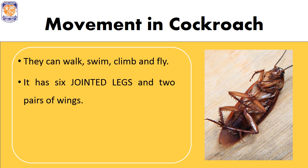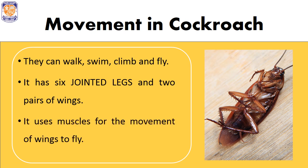They are called jointed legs because they are joined at one particular place. The cockroach uses strong muscles for the movement of its wings to fly, but they are able to fly only for shorter distances.